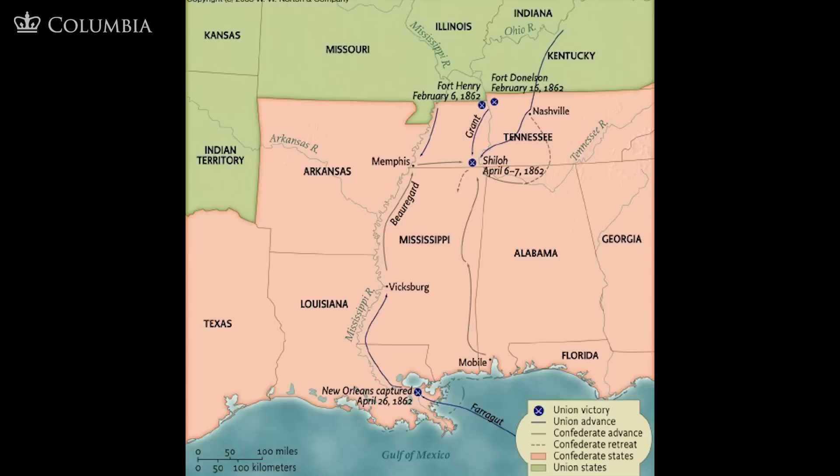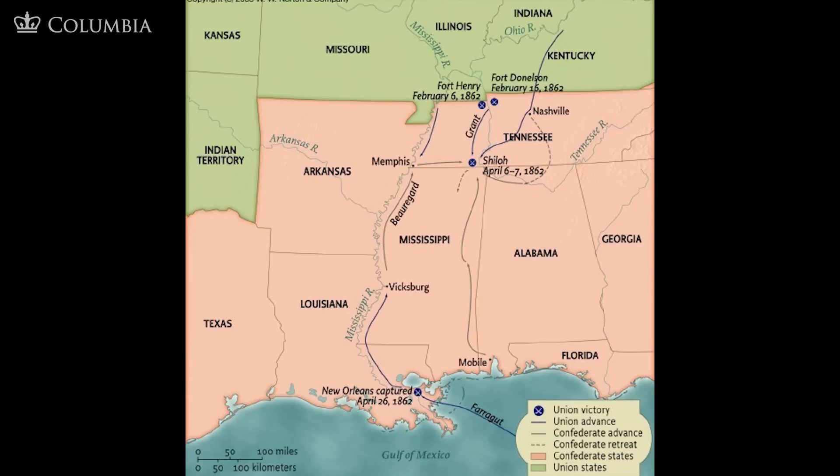This area here — there's Kentucky — is really where an important part of the Civil War takes place at the beginning. Where all these states come together: Tennessee, Kentucky, Indiana, Illinois, Missouri — this is where a lot of the important first battles will take place, or at least in early 1862.